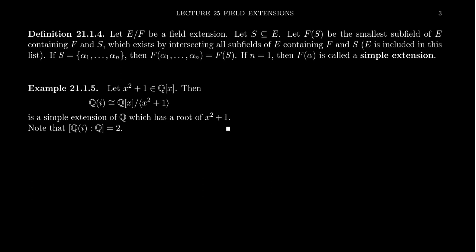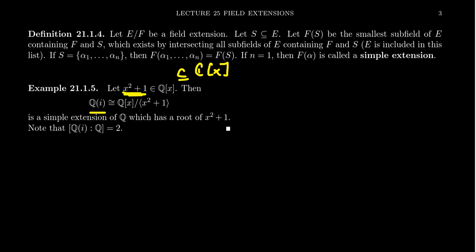For a simple example, take the polynomial x² + 1 viewed as a rational polynomial in Q[x]. By Kronecker's theorem, Q[x] modded out by x² + 1 gives an extension field of Q that has a root of x² + 1. I claim this field is isomorphic to Q(i), where i is a square root of negative one — a root of x² + 1 viewed as a complex polynomial. So Q(i) is a simple extension.